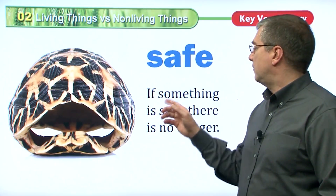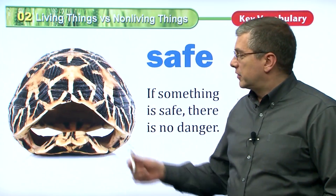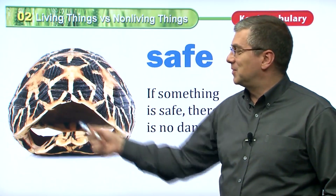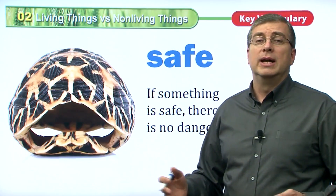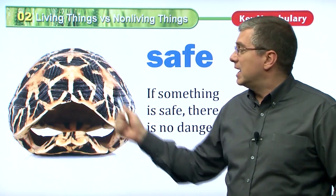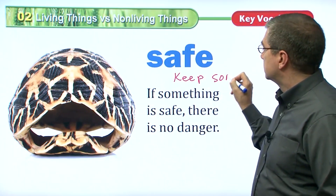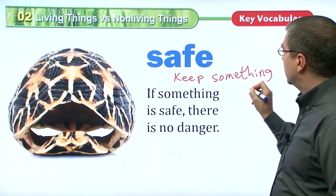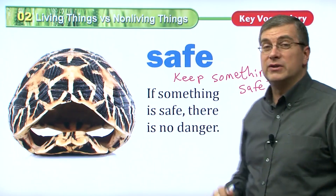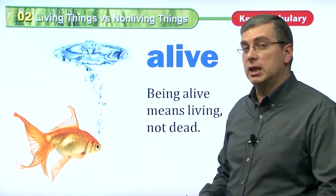Here we have the word 'safe.' Something is safe when there is no danger. This image shows a turtle's shell. The turtle used to live here — it was safe when it was alive. The shell kept it safe. But all things die; all things grow and eventually die, that's part of the life cycle. So while the turtle was alive, the shell protected it and kept it safe.